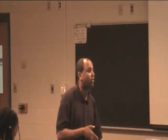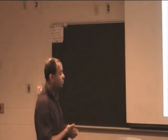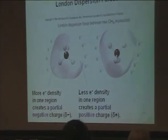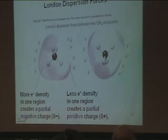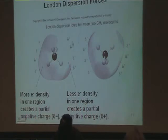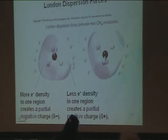A student asked: in a diagram showing London dispersion, why does one side have more electrons than the other? The answer: a partial positive charge means there are not more electrons there — a plus sign indicates less electron density in that region. A minus sign indicates more electron density. That actually creates an inducing force — a London dispersion force.